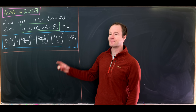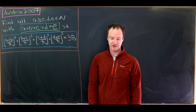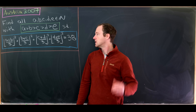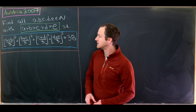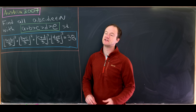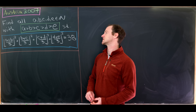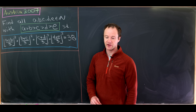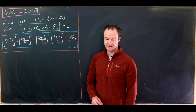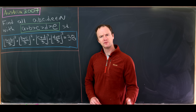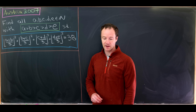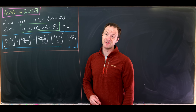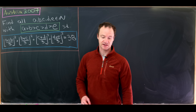Those numbers have to satisfy the following equation: the floor of (A+B)/3 squared plus the floor of (B+C)/3 squared plus the floor of (C+D)/3 squared plus the floor of (D+E)/3 squared is equal to 38. Let's make some opening observations first, and then we'll dive into the meat of this solution.